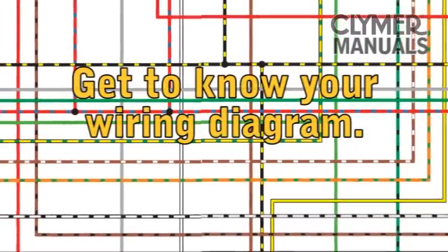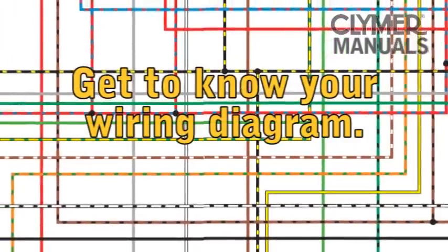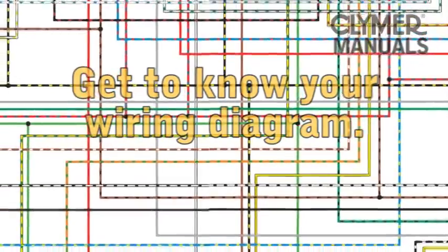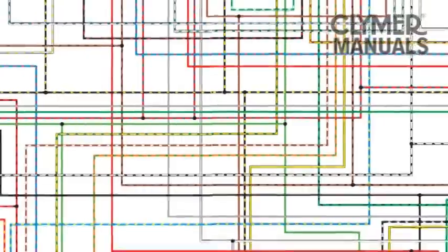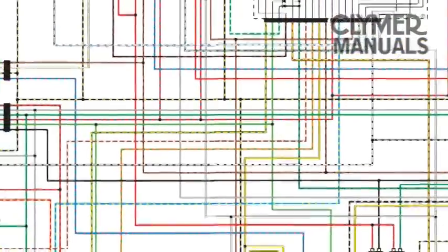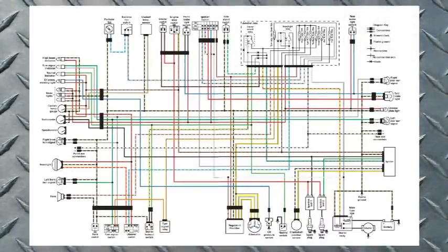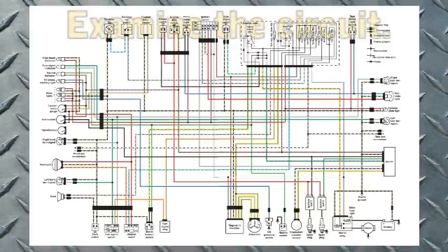For this you need a wiring diagram. So let's keep it simple and look at a typical headlight circuit and break it down. In this example we'll use our Clymer Ninja manual's wiring for reference. However, the theory we'll cover will apply to any circuit or machine.